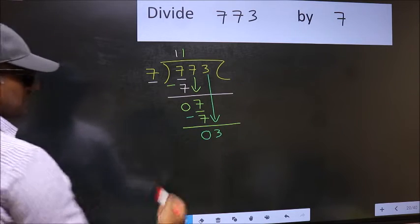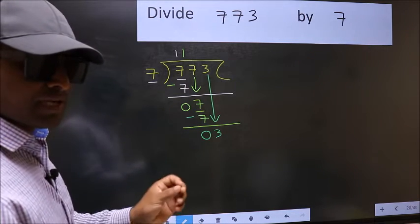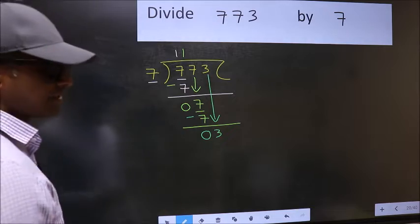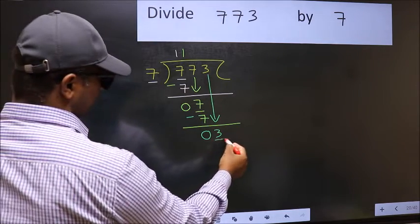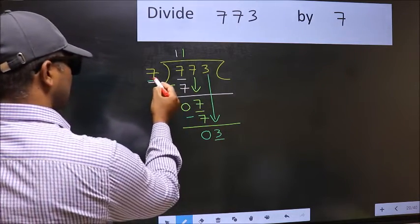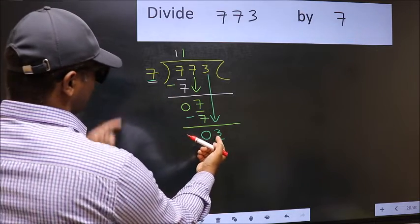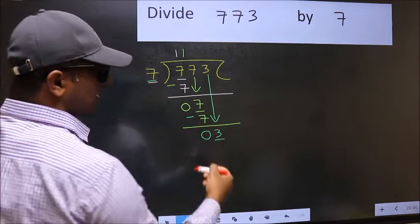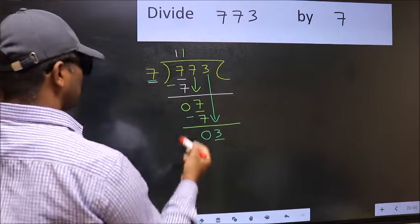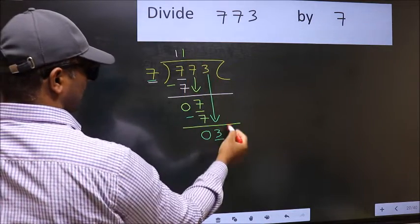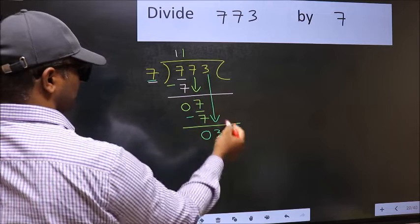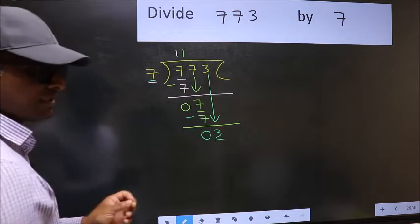After this step, the mistake happens. And the mistake is this. Here we have 3 and here 7. 3 is smaller than 7. So what many do is they directly put dot and take 0, which is wrong.